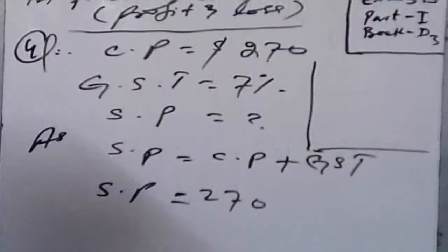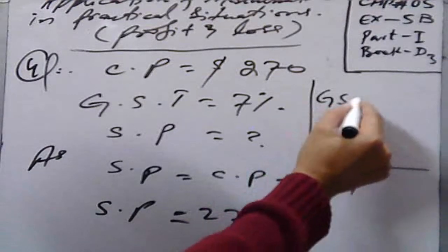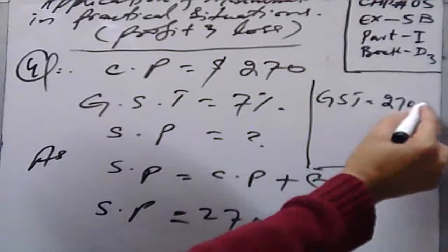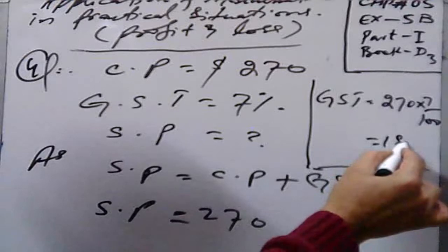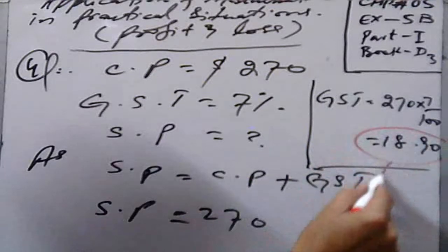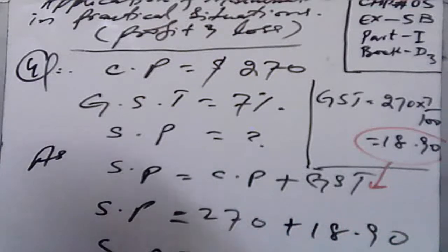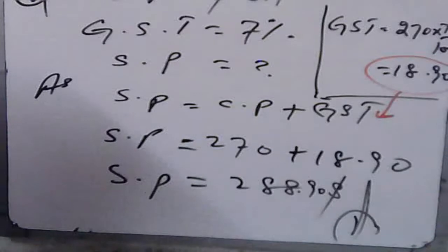GST is 7% of the cost price, so GST = (270 × 7) ÷ 100 = $18.90. Now, Sale Price = Cost Price + GST = 270 + 18.90 = $288.90. That is your required result for question number four.